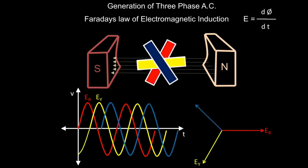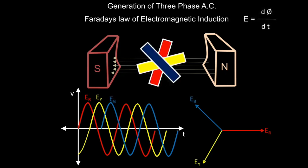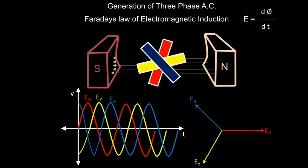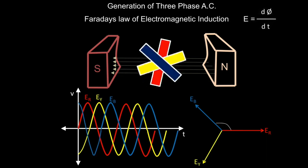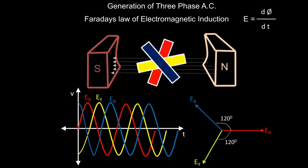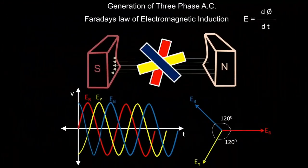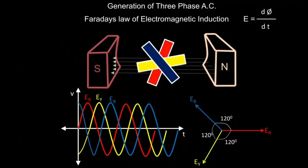The waveform of induced EMF for the blue conductor will start from 240 degrees from the origin. So here we can see there are three waveforms and we got three phasors. EB is lagging EY again by 120 degrees. So in total we have three voltages: ER, EY, and EB. As there are three voltages, this is called three-phase voltage, and in three-phase voltage there is a phase displacement of 120 degrees between each phase.